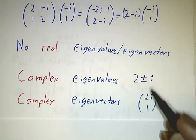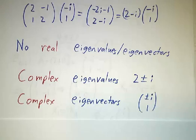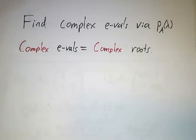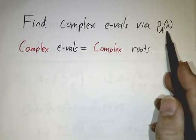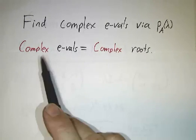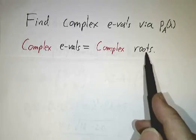2 eigenvalues, 2 eigenvectors, that's what you'd expect from a 2 by 2 matrix. Now the way that you find complex eigenvalues is the same as the way that you find real eigenvalues. You compute the characteristic polynomial, and then the eigenvalues are the roots of the polynomial. The real eigenvalues are the real roots. The complex eigenvalues are the complex roots.